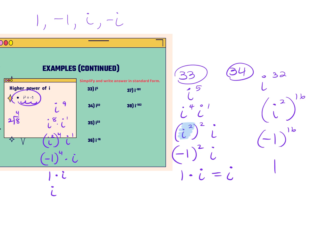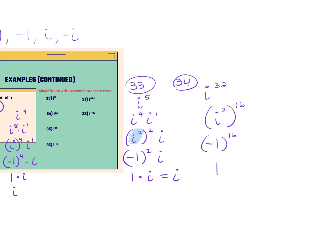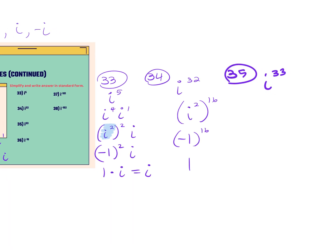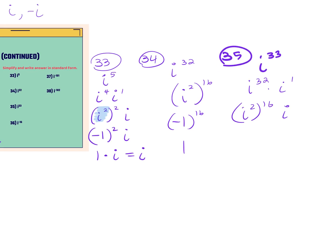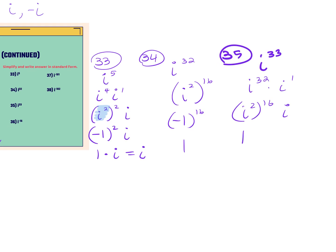For number 35, i to the 33rd: we can make it i to the 32nd times i to the first. We just did i to the 32nd — that's i squared raised to the 16th power, which became 1. So 1 times i gives a final answer of i.